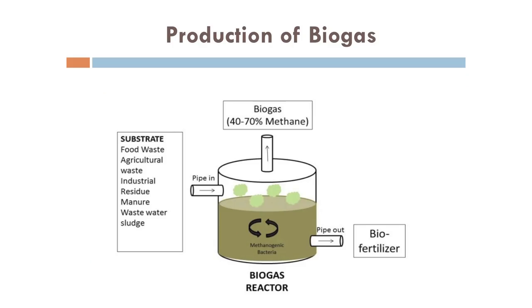Next is the production of biogas. In biogas production we require agricultural waste or mainly organic waste which can be agricultural waste, fecal waste, manure, or food waste, and we prepare a slurry where it is mixed with water in a certain ratio and then it is fed into the bioreactor or fermenter. In India, cow dung is commonly available in large quantities, so we mainly use cow dung to prepare biogas. This cow dung already has methanogenic bacteria present — which is the methane-producing bacteria.